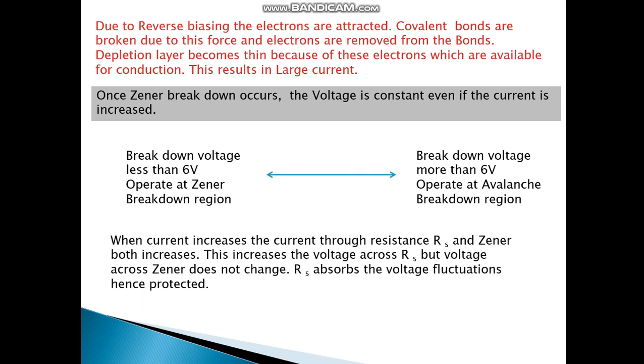When current increases, current through the resistance RS and the Zener both increases. This increases the voltage across RS, but voltage across the Zener does not change. RS absorbs the voltage fluctuations, hence gets protected.